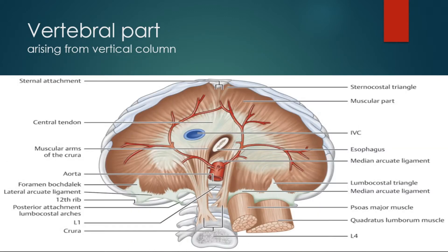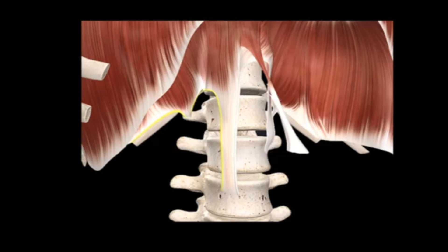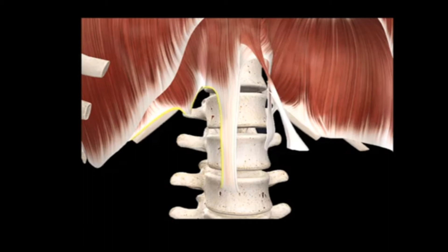The vertebral origin of the diaphragm is a bit complex. There are two muscular bundles: the right crus and the left crus. The right crus is slightly longer than the left because it attaches one vertebra lower. Normally, the right crus attaches from L1 to L4, and the left crus attaches from L1 to L3, to the vertebral bodies and intervertebral discs. The right crus also splits to encircle the esophagus, so the esophagus passes through the right crus. In the lumbar region, additional attachments include the medial arcuate ligament, lateral arcuate ligament, and median arcuate ligament.